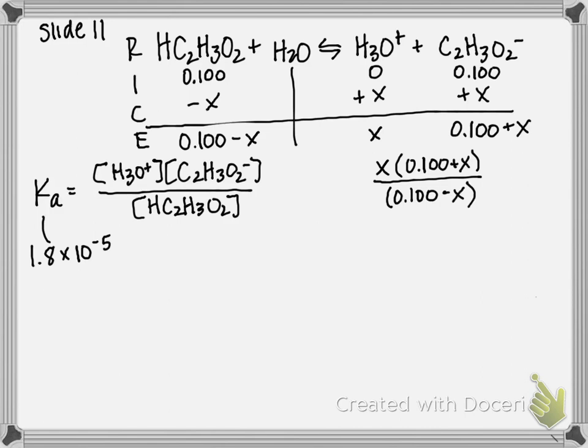Now since our Ka is small we are going to ignore it, and we're not only going to ignore it on the bottom we're also going to ignore it on the top. So this x goes away, that x goes away, so now we're left with 1.8 times 10 to the negative 5 is equal to x times 0.100 over 0.100.